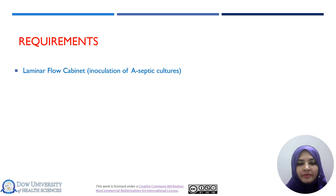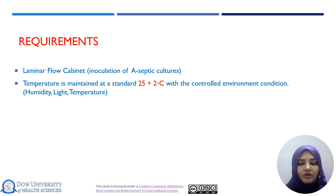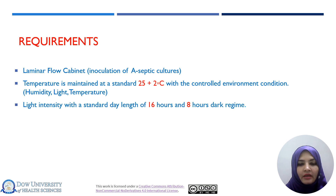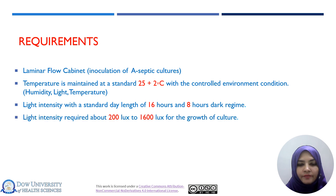The basic requirements include the laminar flow cabinet for inoculation of aseptic cultures. Temperature required is around 25 to 27 degrees centigrade, controlling environmental conditions such as humidity, light, and temperature. The light intensity required for proper plant growth is a 16-hour photoperiod and 8 hours of dark condition. The light intensity ranges from about 200 to a maximum of 1600 lux for best plant growth.